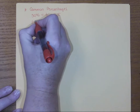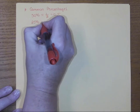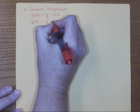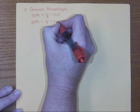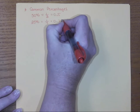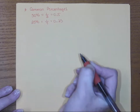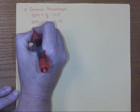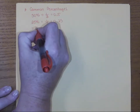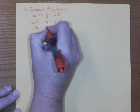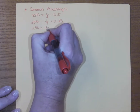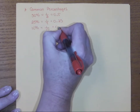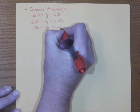I think most of us know that 25% is one quarter, or 0.25. Then let's talk about some other ones. What about 10%? 10% is one tenth and it's 0.1.